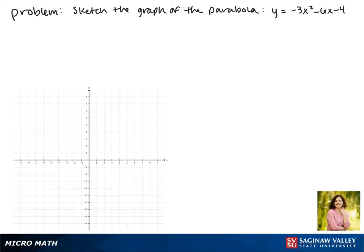Today we'll be sketching the graph of the parabola y equals negative 3x squared minus 6x minus 4. First notice that since the leading coefficient is negative, our parabola will be opening down.